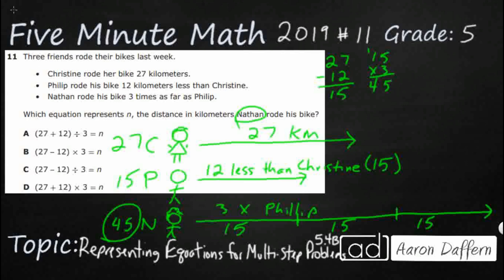Now what we can do is, since we went ahead and worked it out, we can actually put our 45 in here, substitute that in for N for Nathan, and see which of these equations gets us 45.